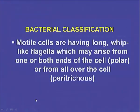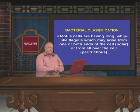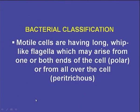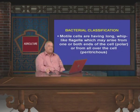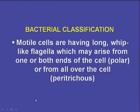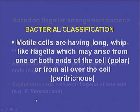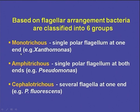Bacterial classification is very important in studying bacteria because there are a large number of bacterial organisms. If we classify them in a particular scientific order, we can easily determine what type of bacteria is causing what type of disease in plants. Motile cells have long whip-like flagella which may arise from one or both ends of the cell — they are known as polar — or from all over the cell — known as peritrichous. By the nature of the bacterial flagella we can identify the type of bacteria. Based on flagellar arrangement, bacteria are classified into six groups.